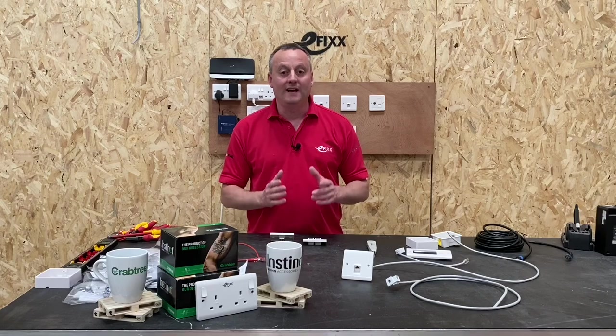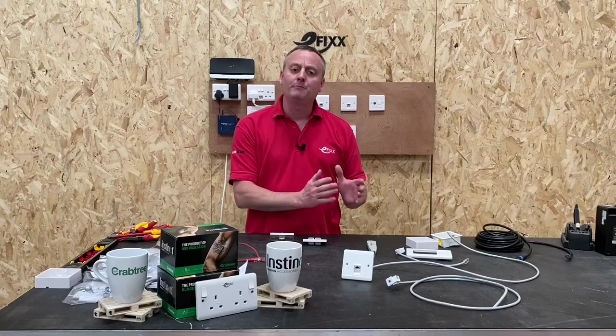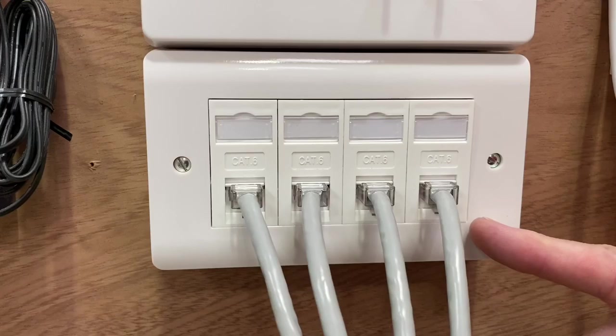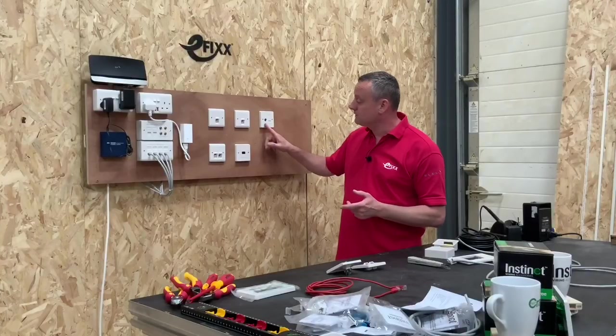In this video we're going to continue a series on home networking. We're going to look at Crabtree's Instinct range. Within that range they do the Euro module, one that we've used here for the RJ45s, for a HDMI lead here and a coax point here.